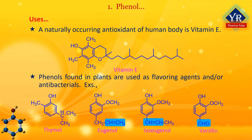Thymol obtained from the herb thyme possesses both flavorant and antibacterial properties and is used as an ingredient in several mouthwash formulations. Eugenol is responsible for the flavor of cloves. Dentists traditionally used clove oil as an antiseptic because of eugenol's presence, and use it to a limited extent even today. Isoeugenol, which differs in structure from eugenol only in the location of the double bond in the hydrocarbon sidechain, is responsible for the odor associated with nutmeg. Vanillin, which gives vanilla flavor, is extracted from the dried seed parts of the vanilla orchid. Natural supplies of vanillin are inadequate to meet demand, so synthetic vanillin is produced by oxidation of eugenol.